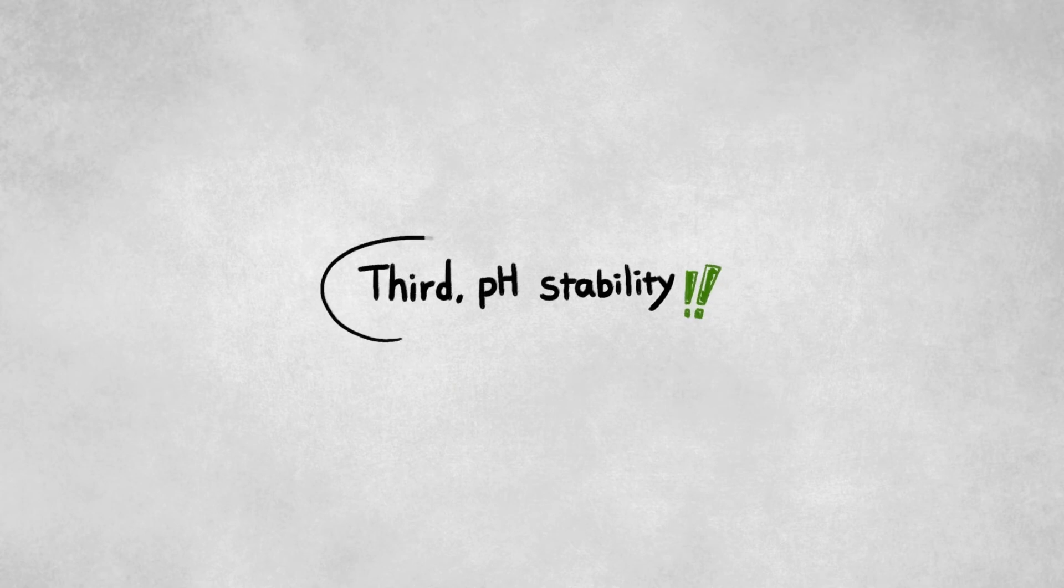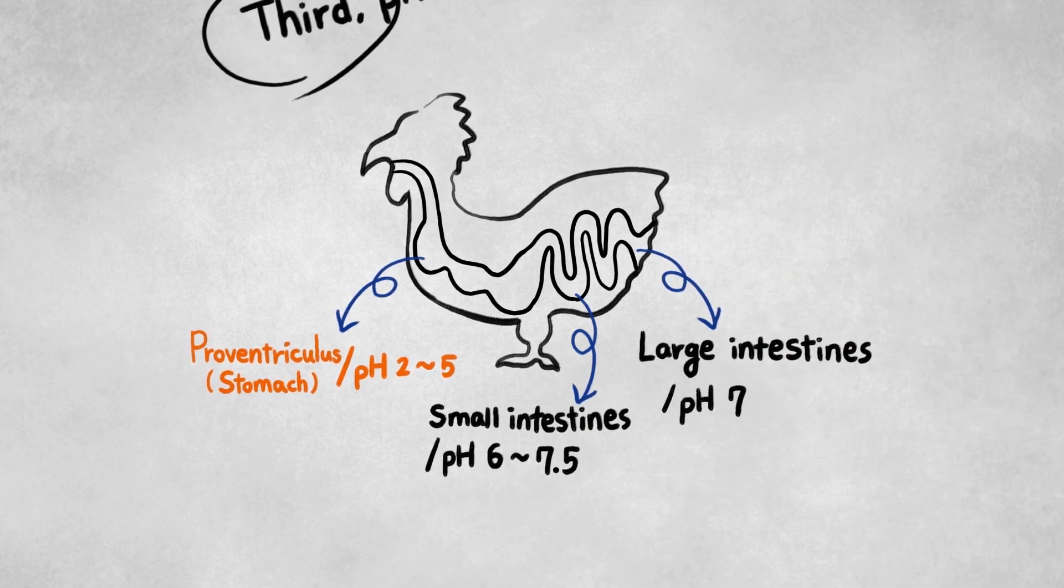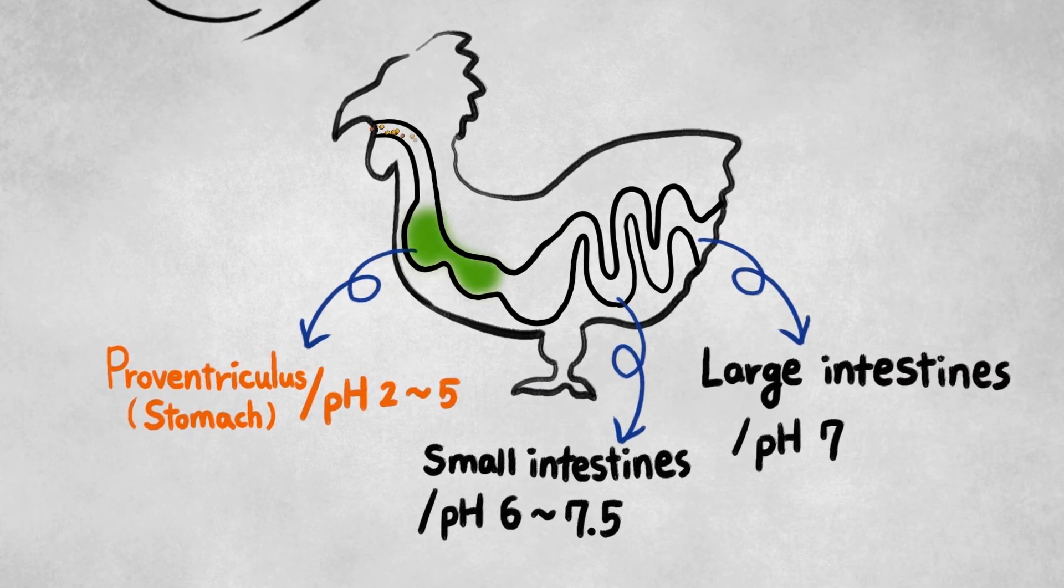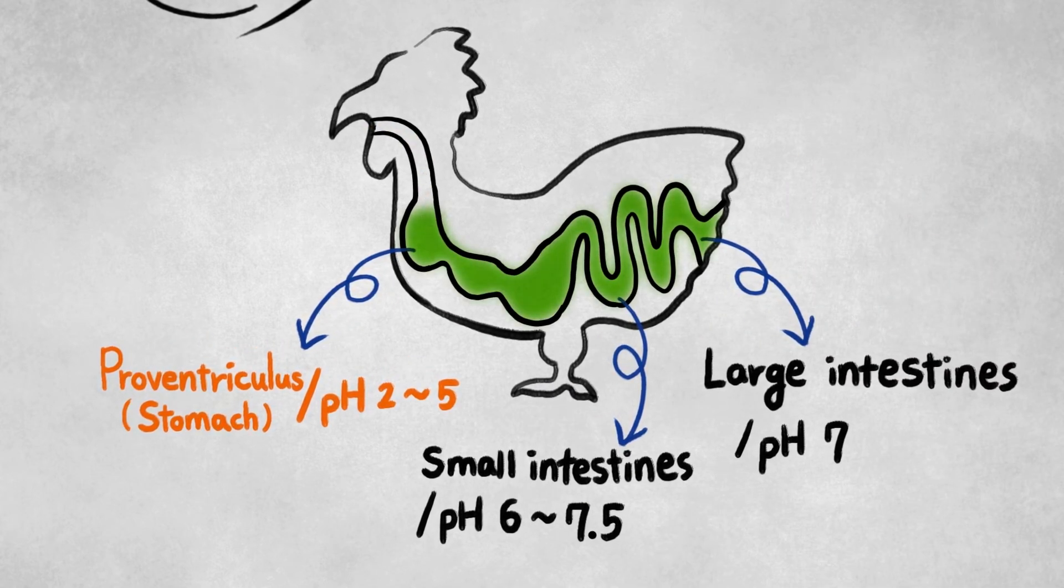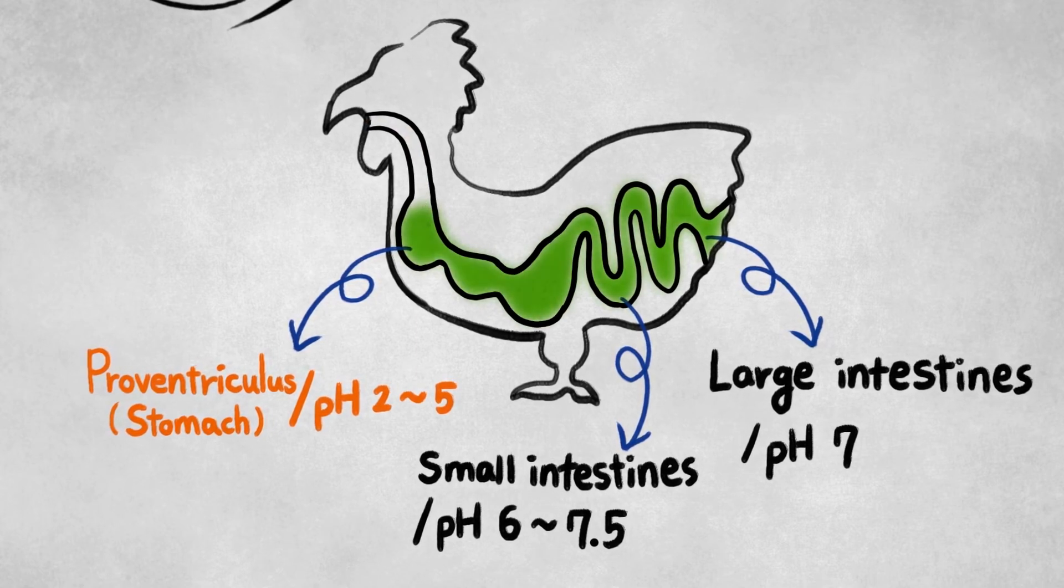The last factor is pH stability. Feed enzyme is supposed to be stable and active at different pH conditions while passing through the digestive tract. Thereby, NSP enzyme can break down feed particles for a longer time.